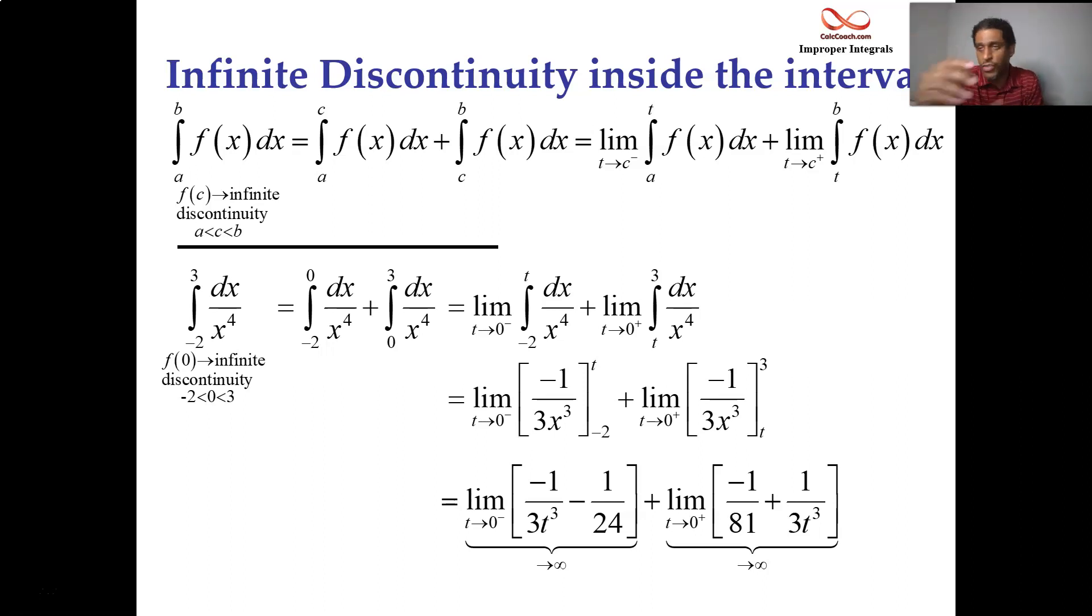The other one's minus 24, you know, when you put a negative 2 in there, but minus 1 over 24. But it doesn't, you know, the first part is going off to infinity, so it doesn't matter. And the fact that that one goes to infinity, you can pretty much conclude then that the integral is divergent.